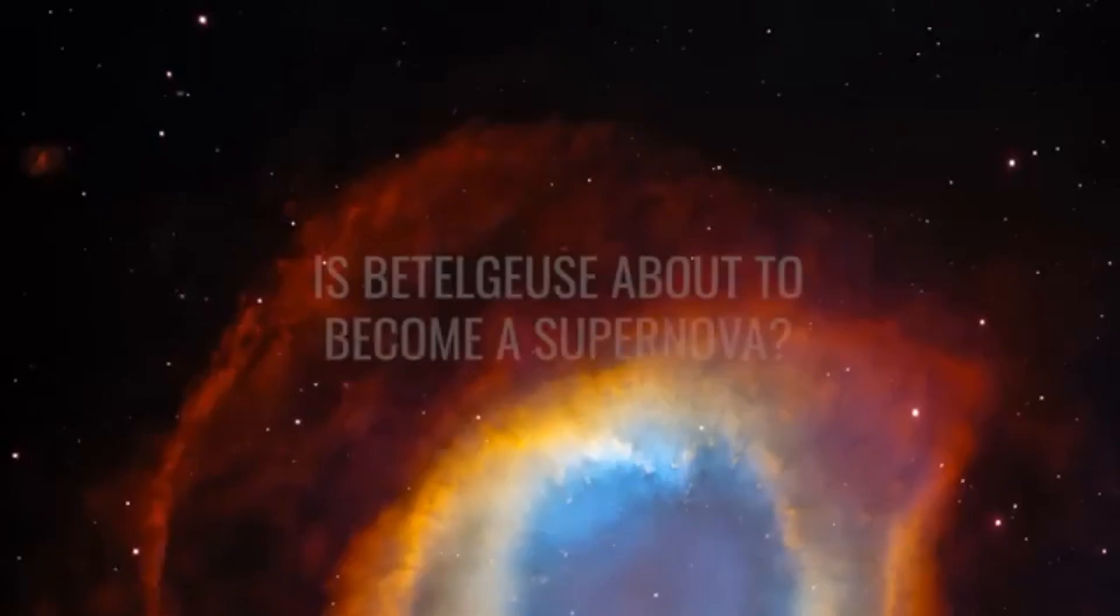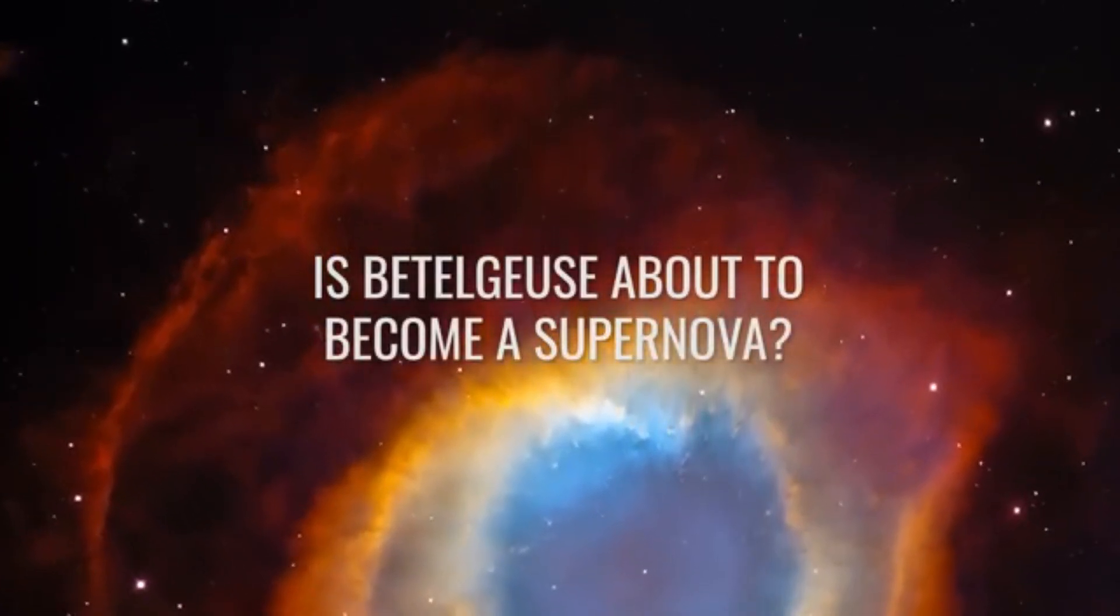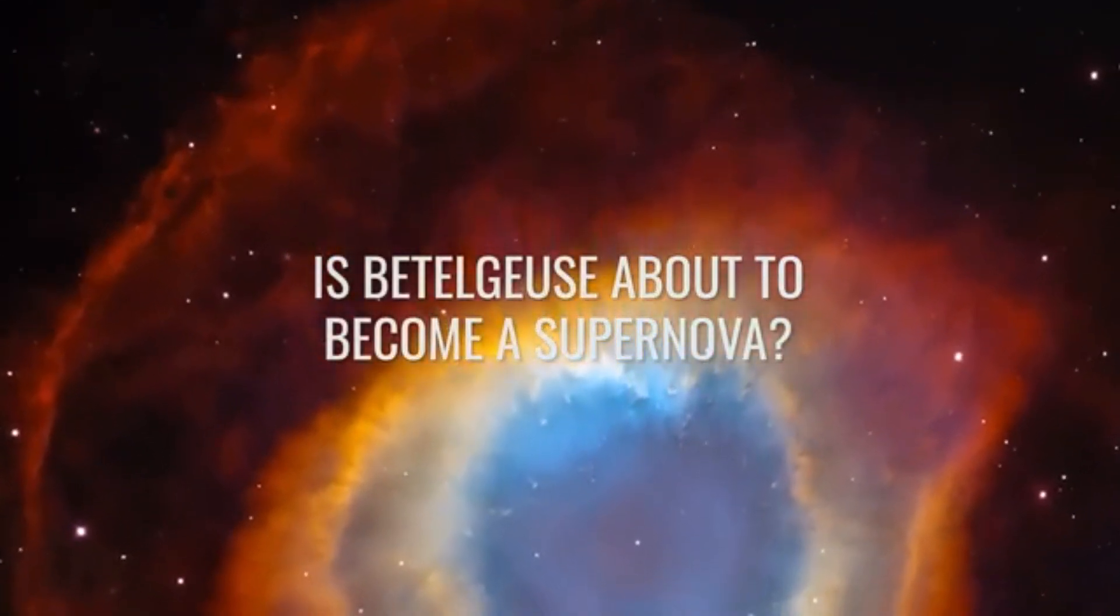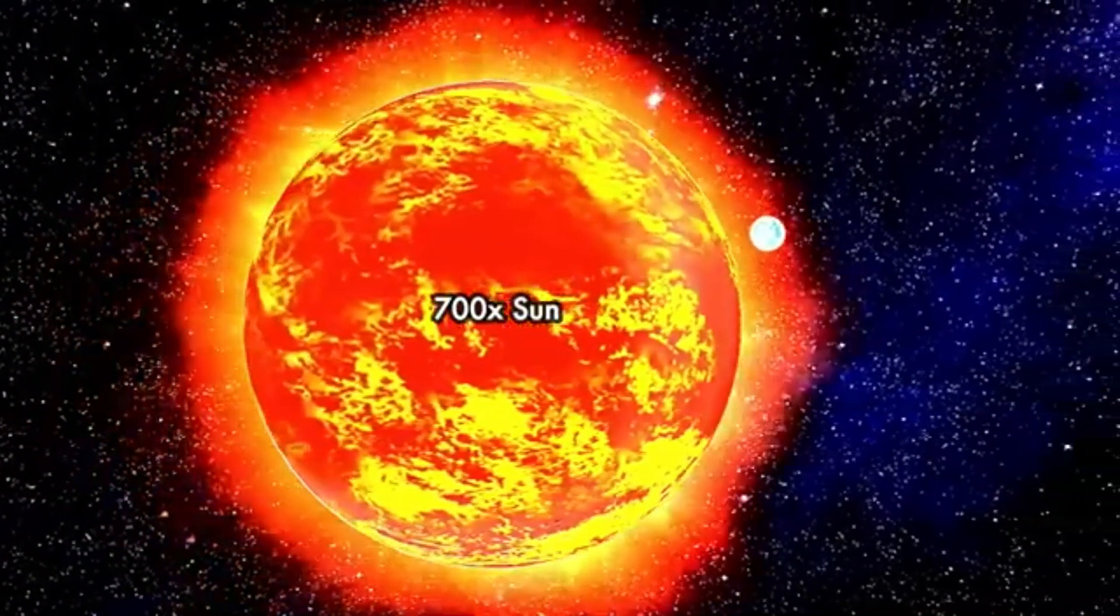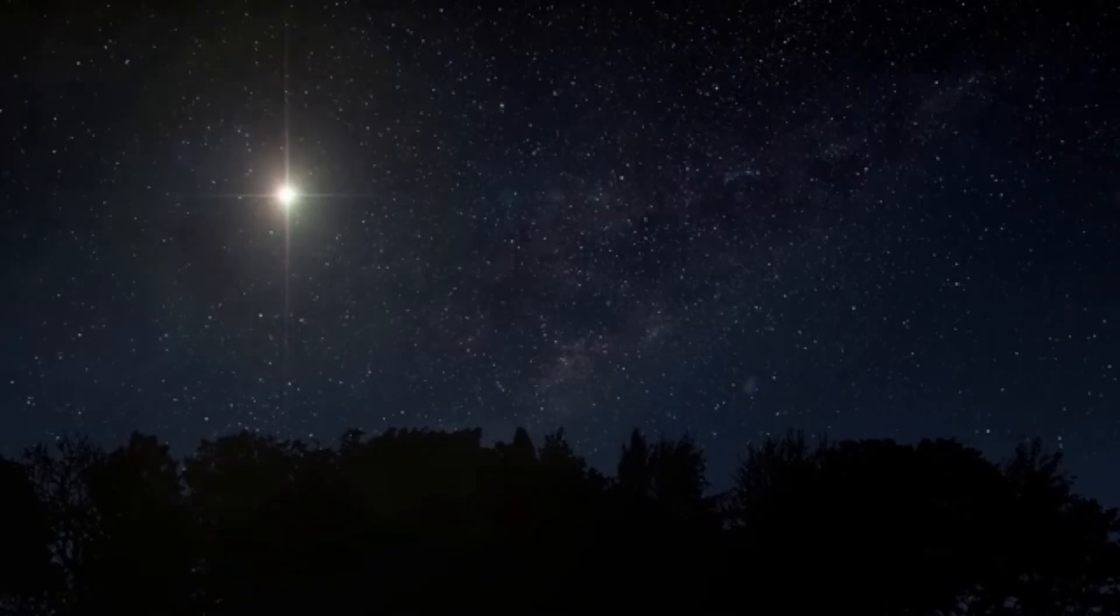During a nova, the explosion ejects material at high speed, creating a gas shell and temporarily turning the system into one of the brightest objects in the sky. Once the explosion fades, the white dwarf resumes pulling material, repeating the cycle.